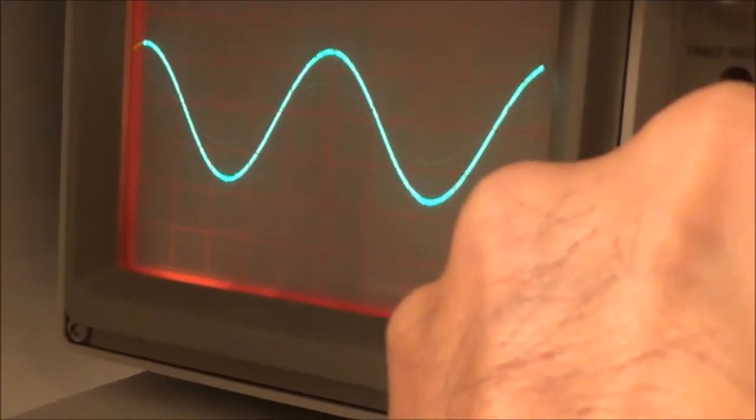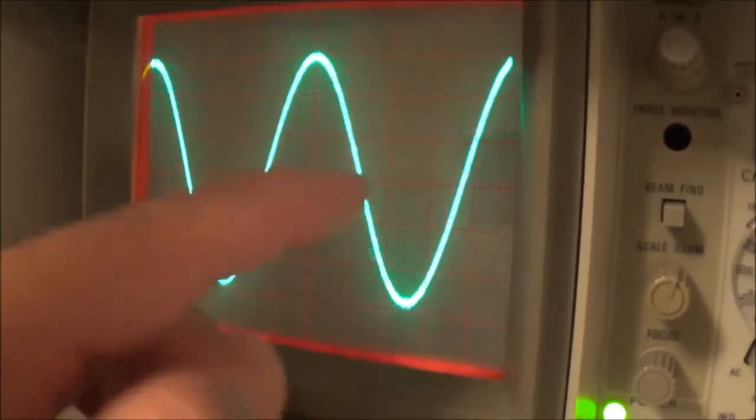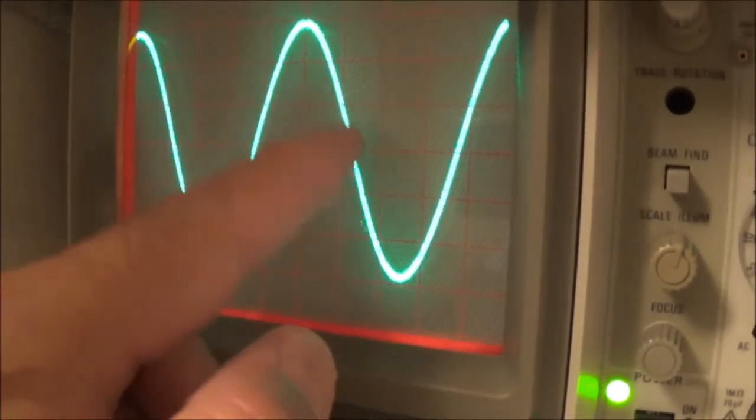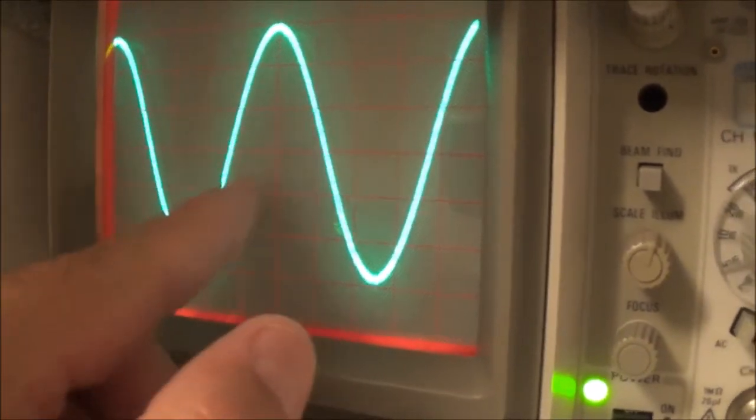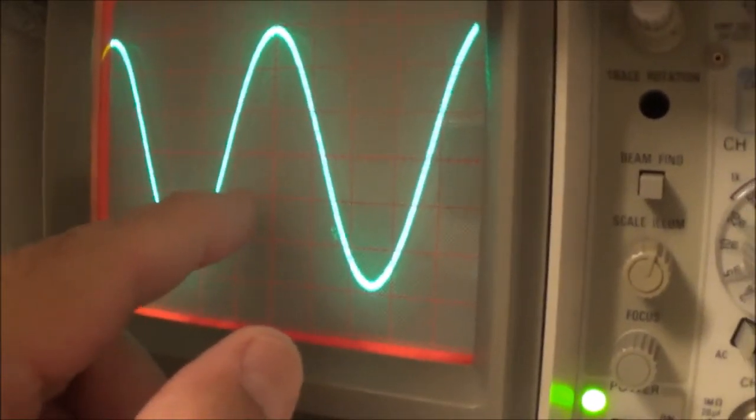There we go. So there's about 300 millivolts of bleed-through coming in from the other channel, and what I have to do now is divide...